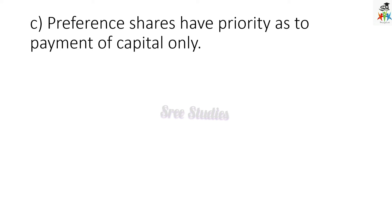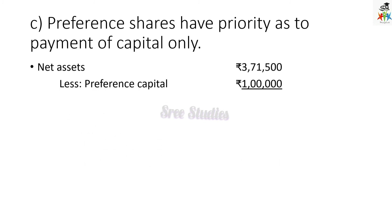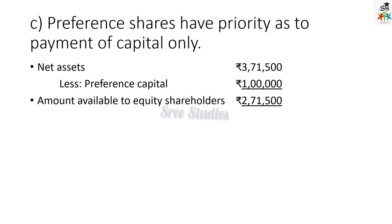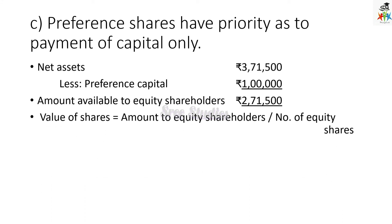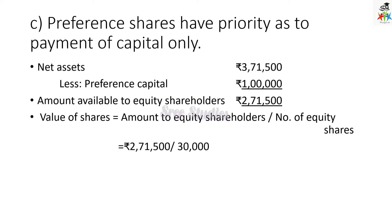Third option: preference shares have priority as to the payment of capital only. Net asset minus preference capital gives the balance available to equity shareholders. Value of share = amount available to equity shareholders ÷ number of equity shares. Substituting the values, you will get Rs. 9.65.